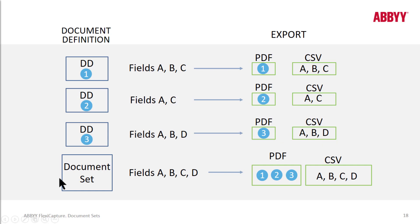With a document set export in addition, you can combine all four of these fields and all three of these document definitions. We can have one PDF file that automatically gets formed containing all three of those document definition images, and then all of our data from all of the forms gets exported to one CSV.